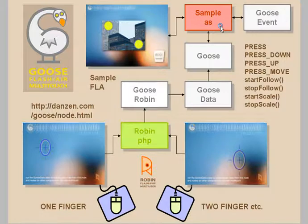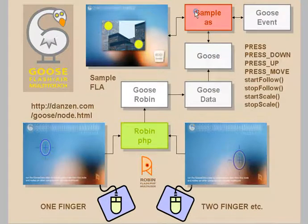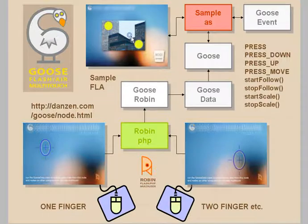Your sample document class is here, and it includes Goose and Goose Data, and allows you to put multiple cursors into your Flash application and pick up things like a picture, and drag it around and scale.